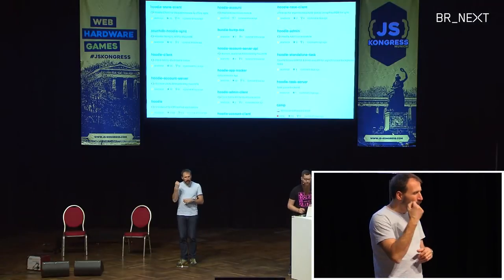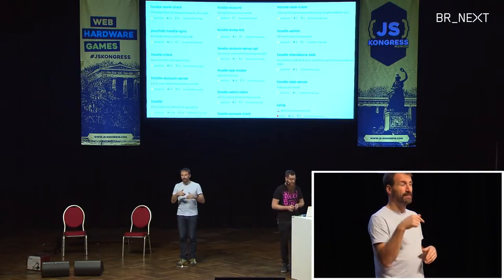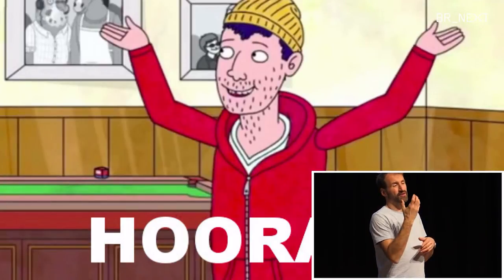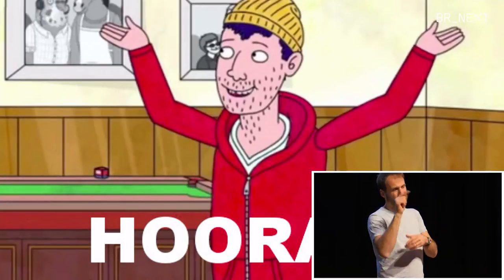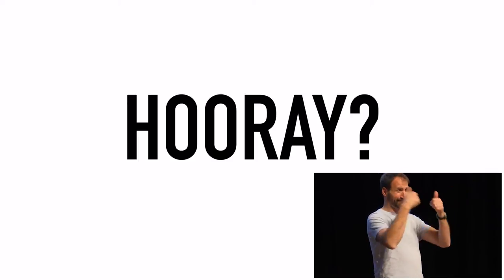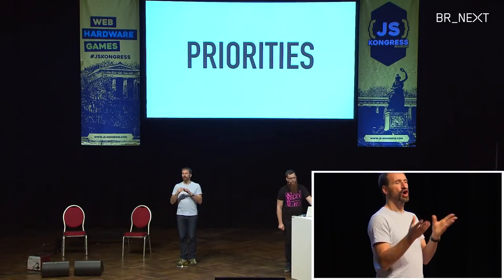Moving to this first level of modularization was such a revolutionary transformation for us that we went all out on it. Today Hoodie is 50-plus repos on GitHub. Everything's great — hooray? So it's a brave new world with all the modules. But aren't there any issues with this?